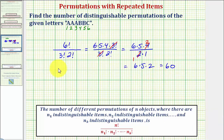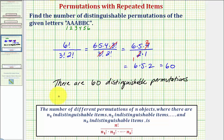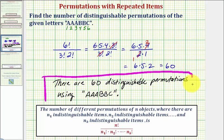So this means there are sixty distinguishable or unique permutations using the given letters or using three A's, two B's, and one C. I hope you found this helpful.